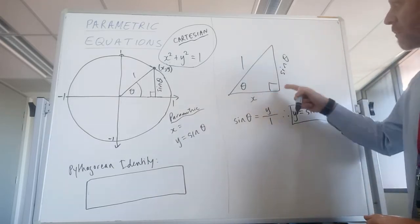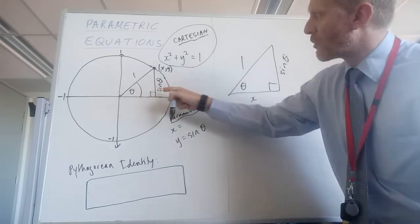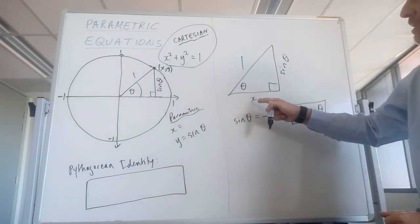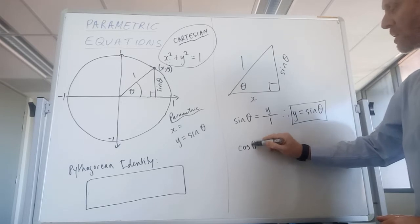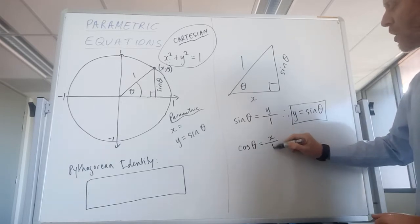And we come over here to the triangle, the same triangle as this triangle. We see that we've got our angle, and we've got the adjacent side and the hypotenuse, so cos theta equals x over 1.